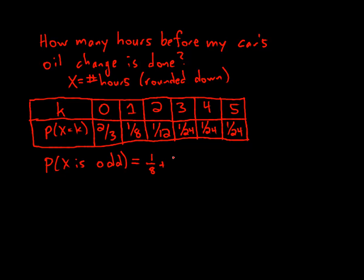That would be 1 eighth plus 1 over 24 plus 1 over 24. And since 1 eighth is 3 over 24, I have 5 over 24.